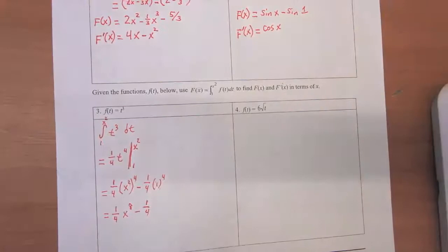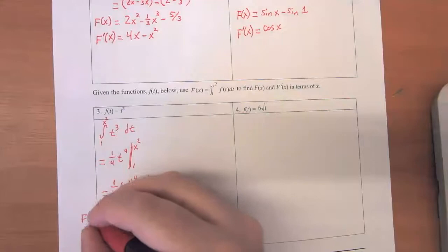OK, so there is big F evaluated at F is equal to that. And what's the derivative of that function?